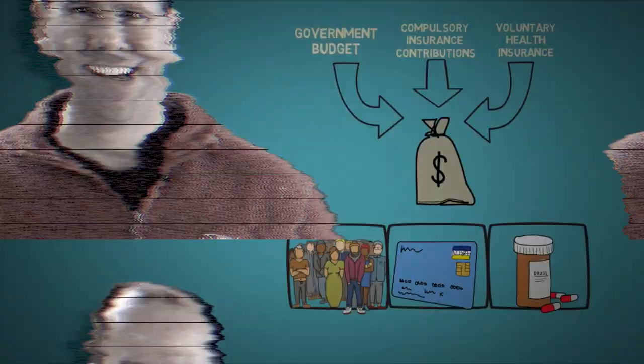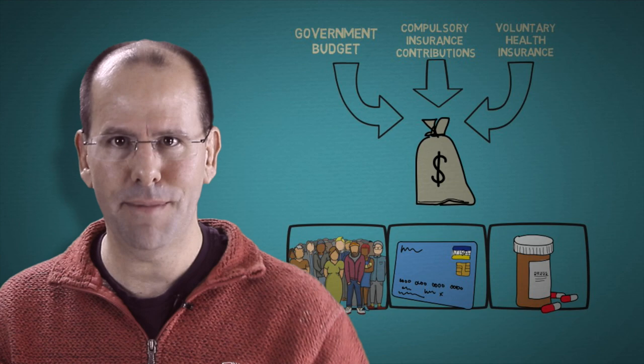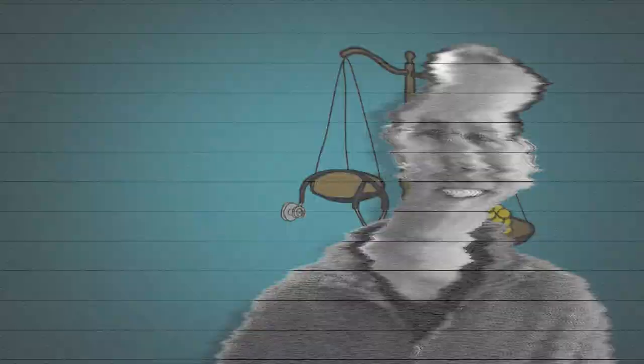And of course policymakers need to make decisions and trade-offs between these dimensions. And they make those trade-offs in a way that maximizes the extent to which people's healthcare needs are met and avoids catastrophic healthcare expenses that can lead to impoverishment.